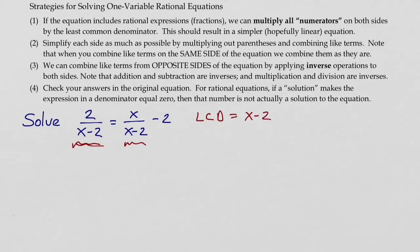So I want to multiply all the numerators by that expression, including any whole numbers that are part of my equation. So the minus two here at the end, I want to also multiply that by x minus two.